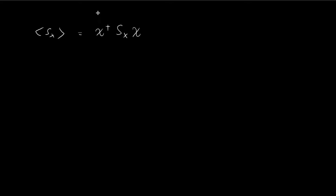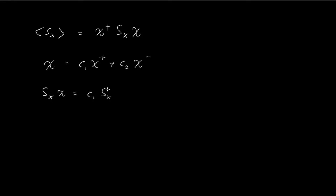In case you're wondering where this formula comes from, you can always understand this spinner as a linear combination of spin-up and spin-down. So this is the spin-up eigenvector, this is the spin-down eigenvector. If I apply Sx to the spinner, I will get Sx applied to the spin-up eigenvector and Sx applied to the spin-down eigenvector, giving the corresponding eigenvalue multiplied by each eigenvector.